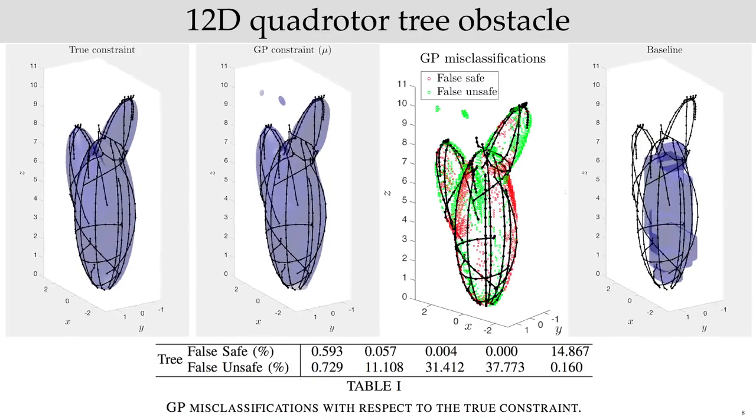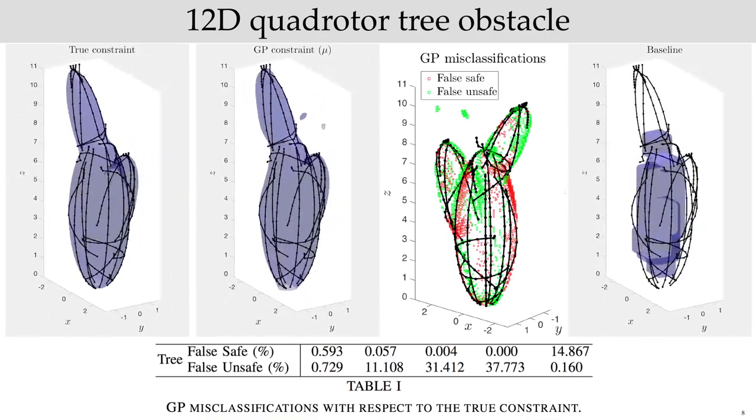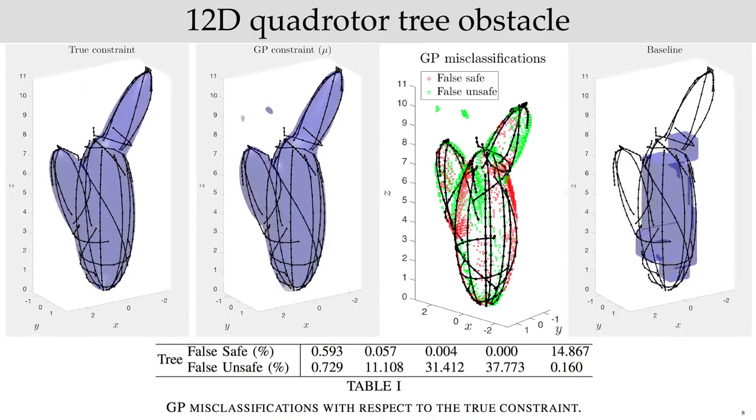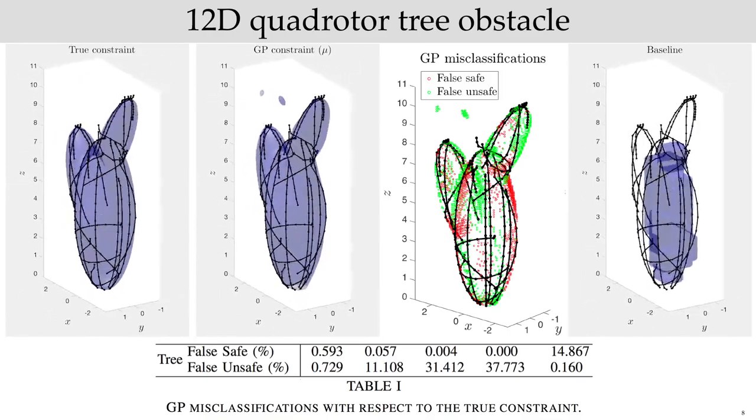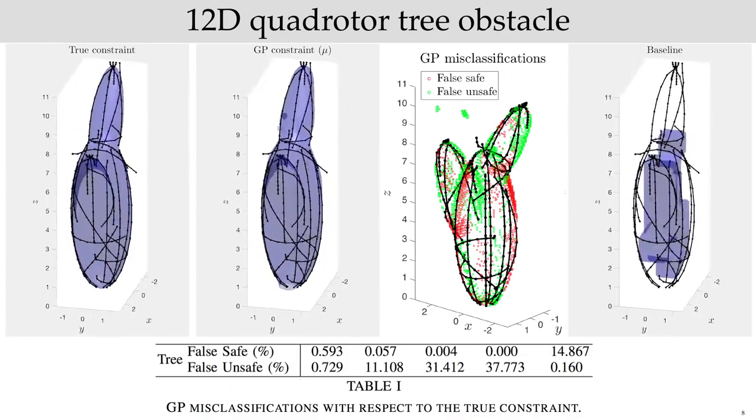We evaluate our approach in a 12D quadrotor. We are given 25 demonstrations avoiding a non-convex obstacle to be learned, and we assume no prior knowledge on its structure. Our method recovers a constraint which is highly faithful to the ground truth obstacle, with minimal misclassification errors.